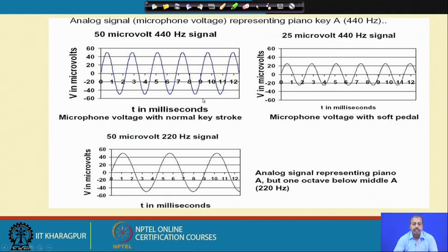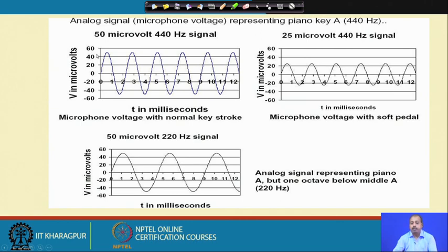For example, consider an analog signal from a piano: key A is at 440 Hz. You can represent it as a sinusoidal voltage signal with a peak of around 50 microvolts. This 440 Hz, 50-microvolt sinusoidal signal — if you plot the time in milliseconds on one axis and the voltage in microvolts on the other — is the signal generated from piano key A.